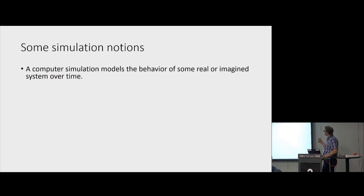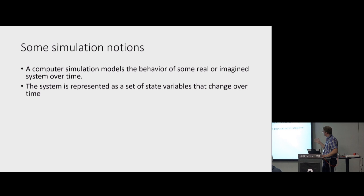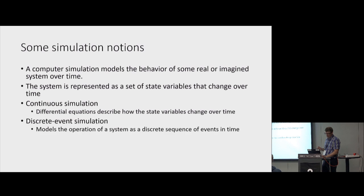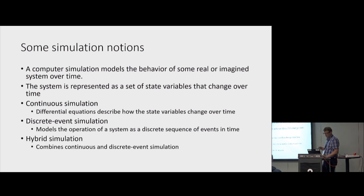A computer simulation models some behavior over time. The system is represented by a set of state variables that change over time. Continuous simulation uses actual differential equations to describe these state variables. Discrete event simulation uses not differential equations, but a sequence of events in time. And hybrid simulation combines the two, which is what one of our simulators does.